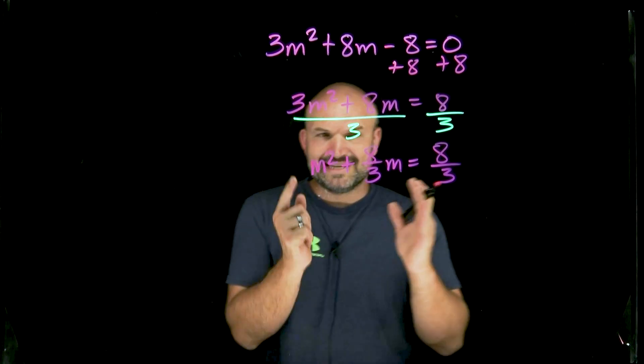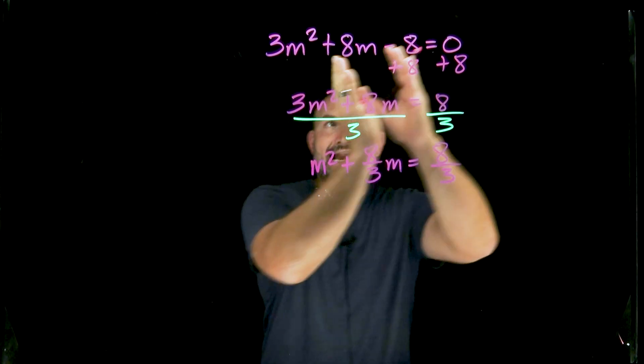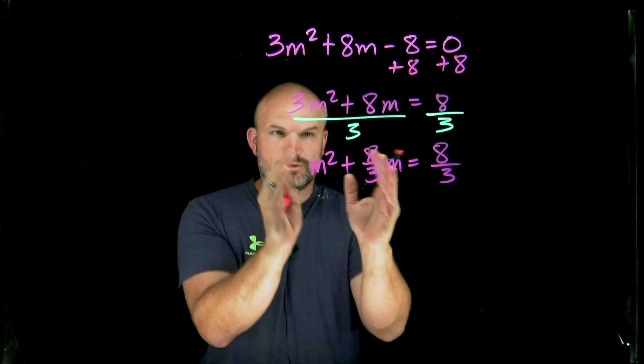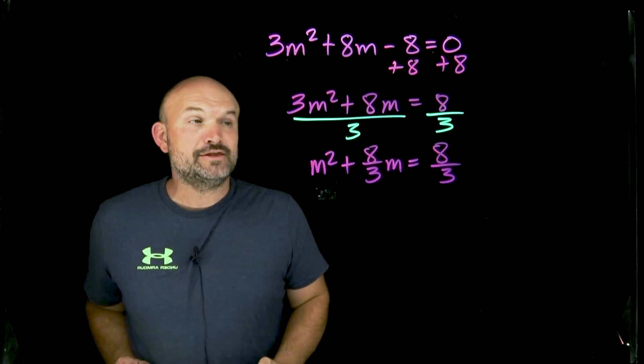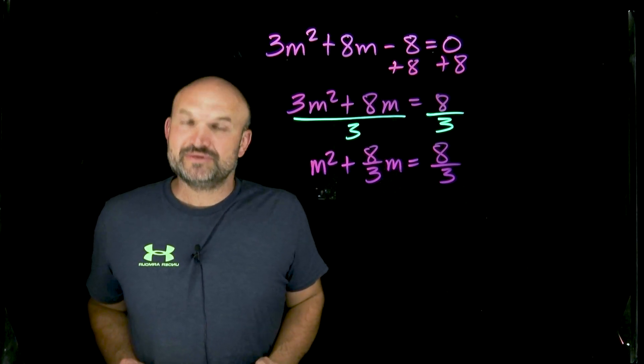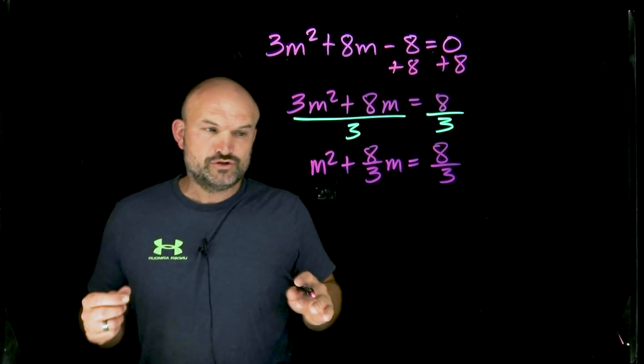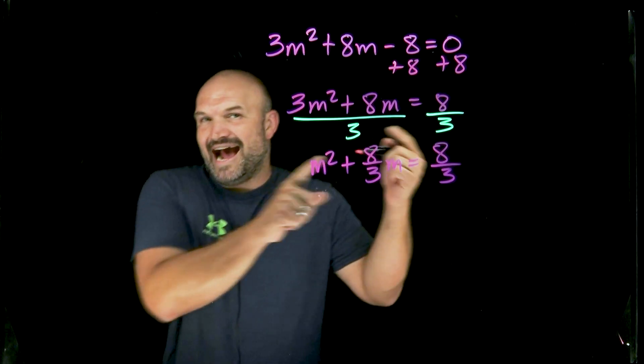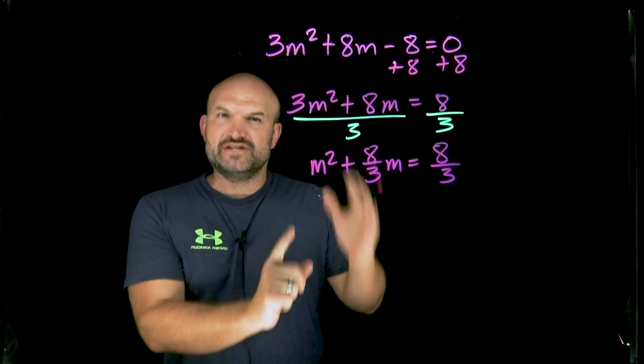Remember, the whole idea of completing the square and getting that eight to the other side is because we need to create a perfect square trinomial of m squared plus eight-thirds m. We need to create a perfect square trinomial out of that. So what we need to do is we need to find a value c that is going to create that. So what I'm going to do is I'm going to add the value c here just so we can visualize it.